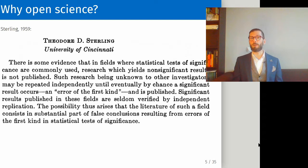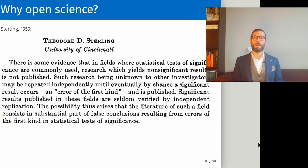Why is Open Science important? We can go as far back as the 1950s when Theodore Sterling already commented that it's possible that only studies finding significant p-values end up being published. Inevitably some of these findings are bound to be type 1 errors — false positive or spurious findings. If a literature focuses primarily on significant results, there may be less focus on replication, and spurious findings like these end up going uncorrected.